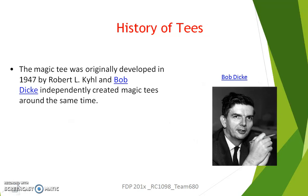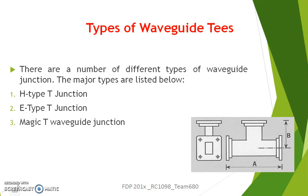The history of Waveguide T dates back to 1947, and it was developed by Robert Keel and Bob Dick at the same time. The different types of waveguide Ts are E-plane T, H-plane T, and Magic T.